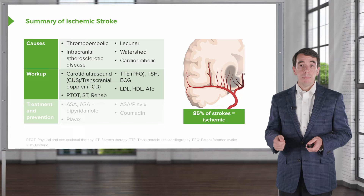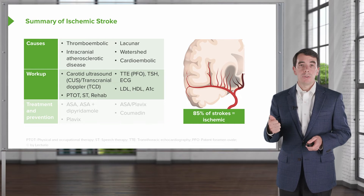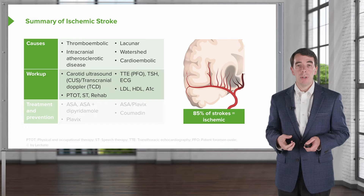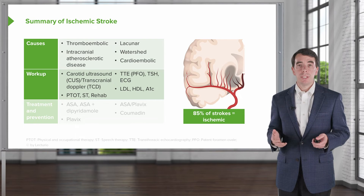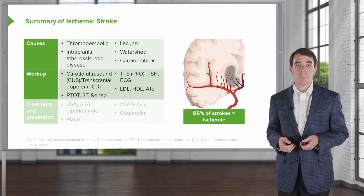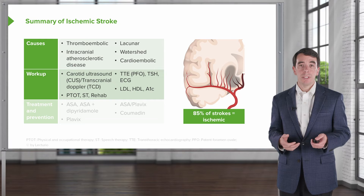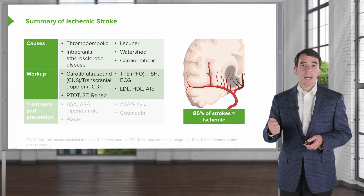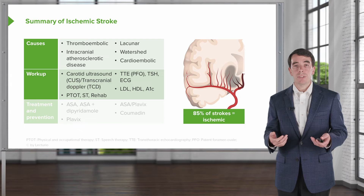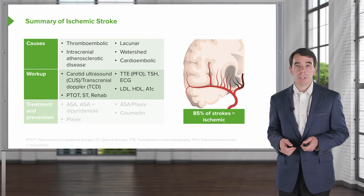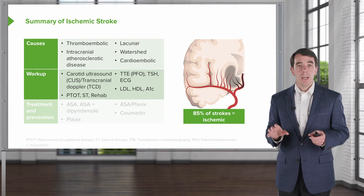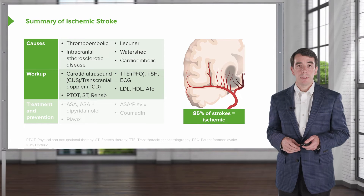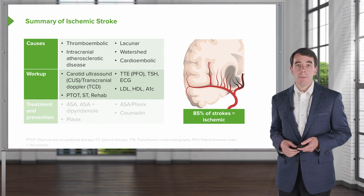When we think about the diagnostic workup, we're working up each of those major causes. We'll do carotid ultrasounds or transcranial Doppler to look at the blood vessels going to and within the brain. Transthoracic echocardiography evaluates the heart and looks for a patent foramen ovale, and blood testing — including thyroid studies and EKGs — looks for paroxysmal atrial fibrillation. We also evaluate cholesterol, LDL and HDL, and hemoglobin A1C as stroke risk factors. Rehabilitation — physical, occupational, and speech therapy — is critically important for recovery.